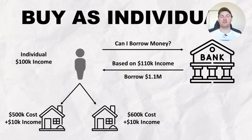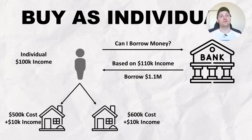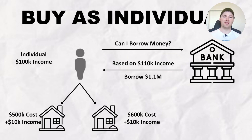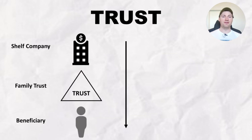However, this still limits you. After two properties — even with a higher portfolio value than the negatively geared counterpart — you've completely limited your serviceability and cannot borrow more until you either pay off debt or sell one of the properties. And this is where trusts come in.